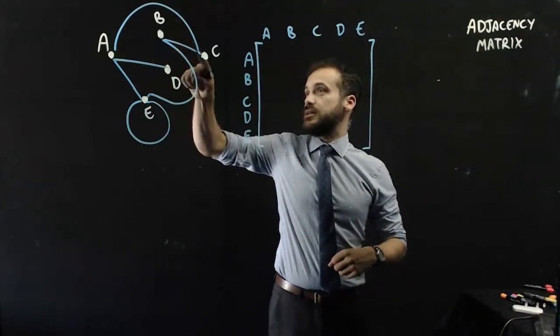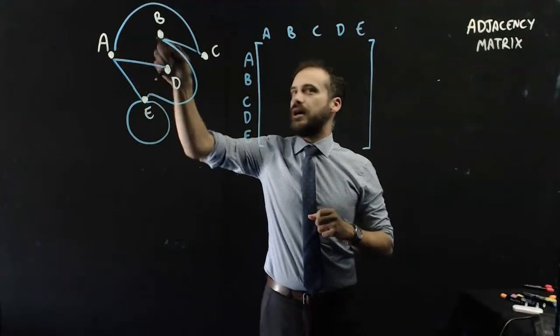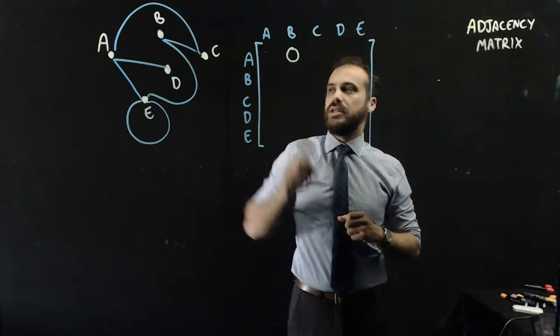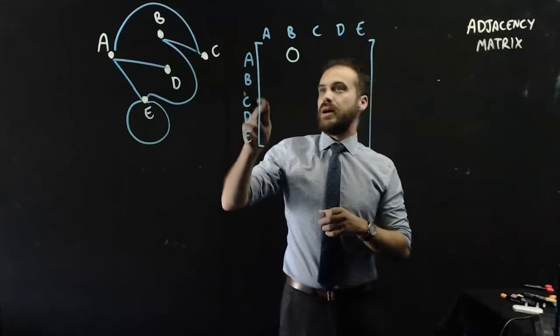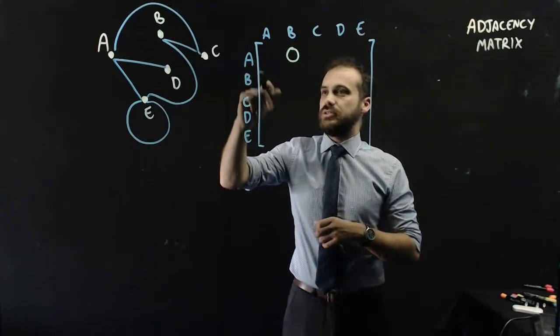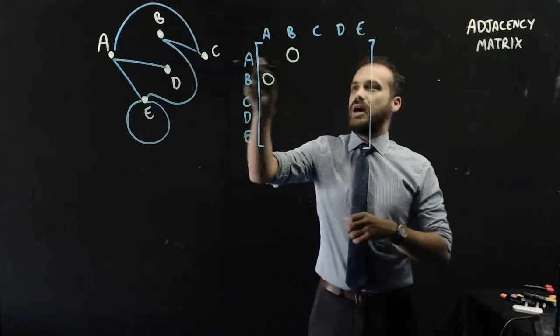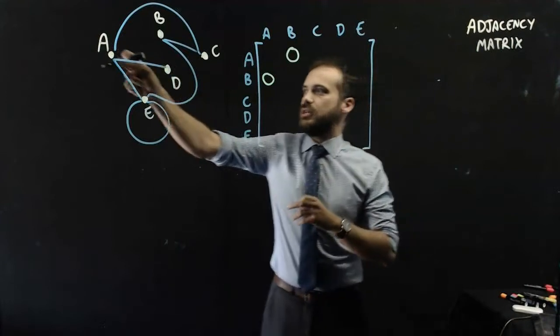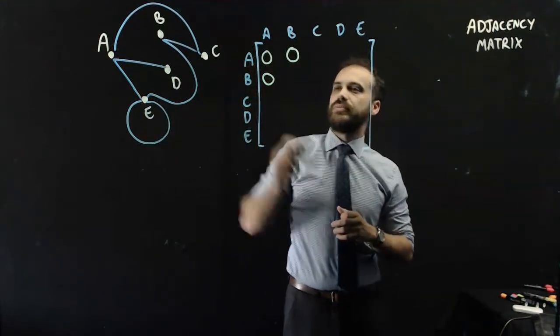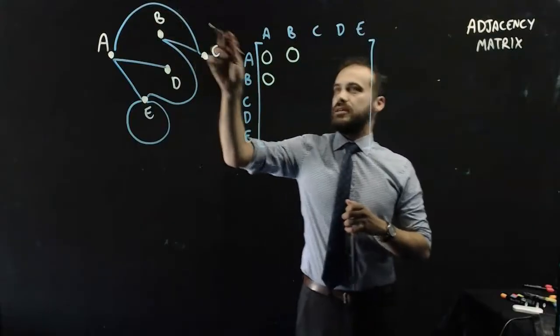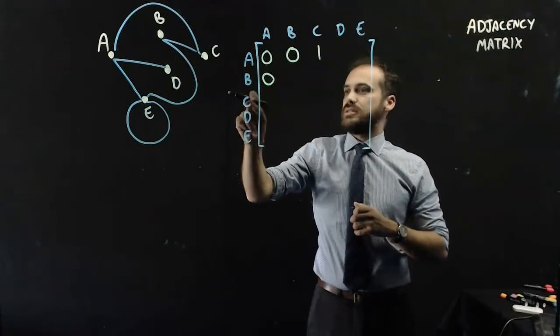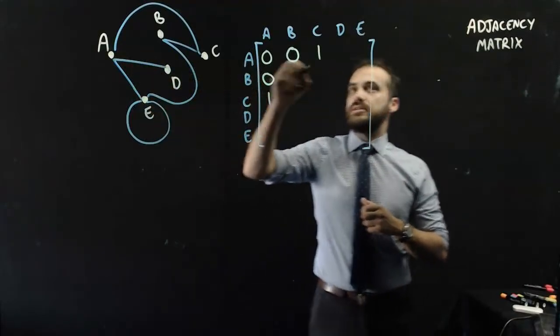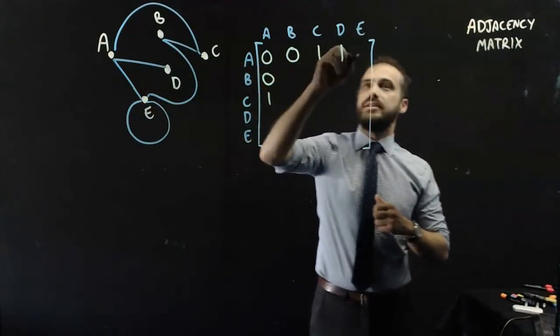Alright, let's do things in order. A and B are not connected, so we give it a 0. There's going to be a matching B, A entry. What about A, A? A is not connected to itself, so we'll give that a 0. A, C is connected, and so is C, A. A, D is connected, A, E is connected. Let's do the matching ones, D, A and E, A.